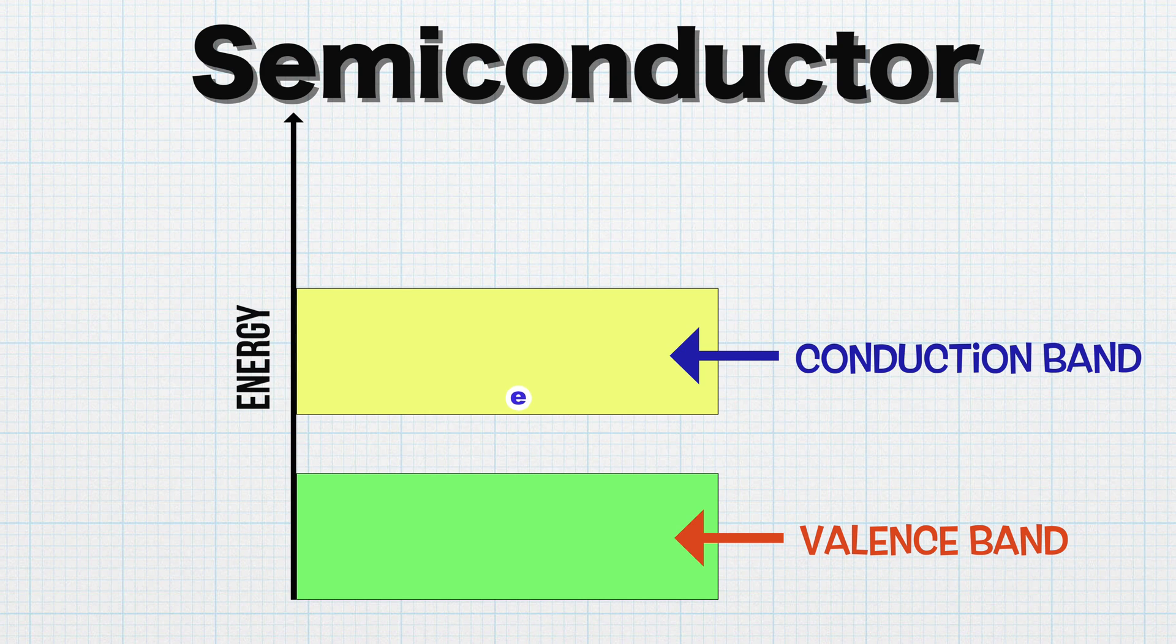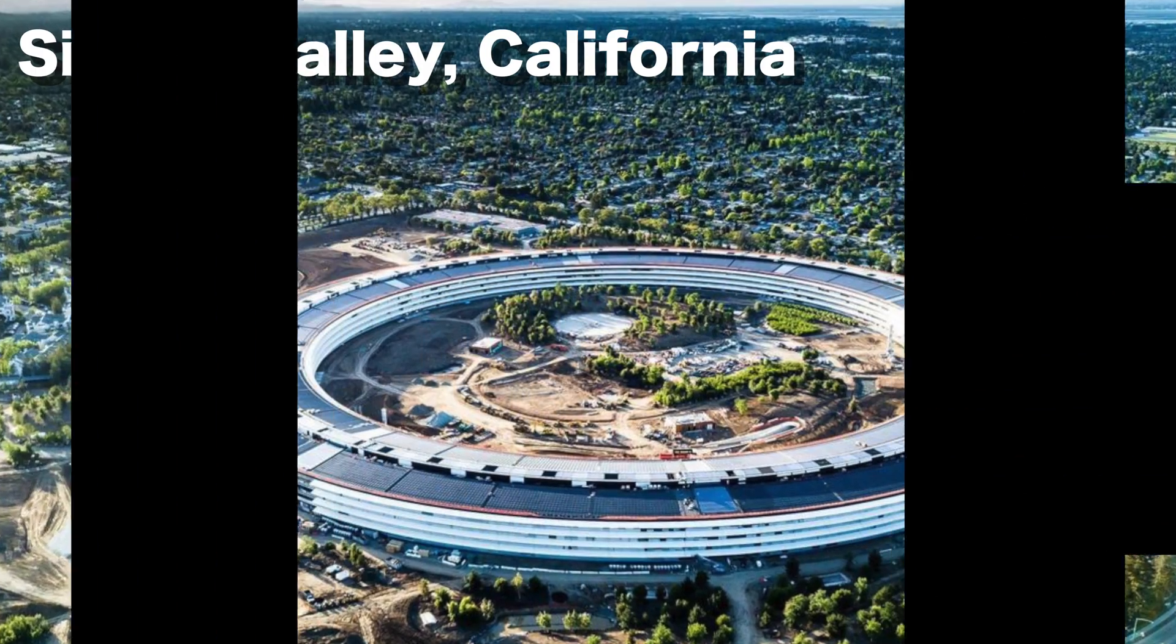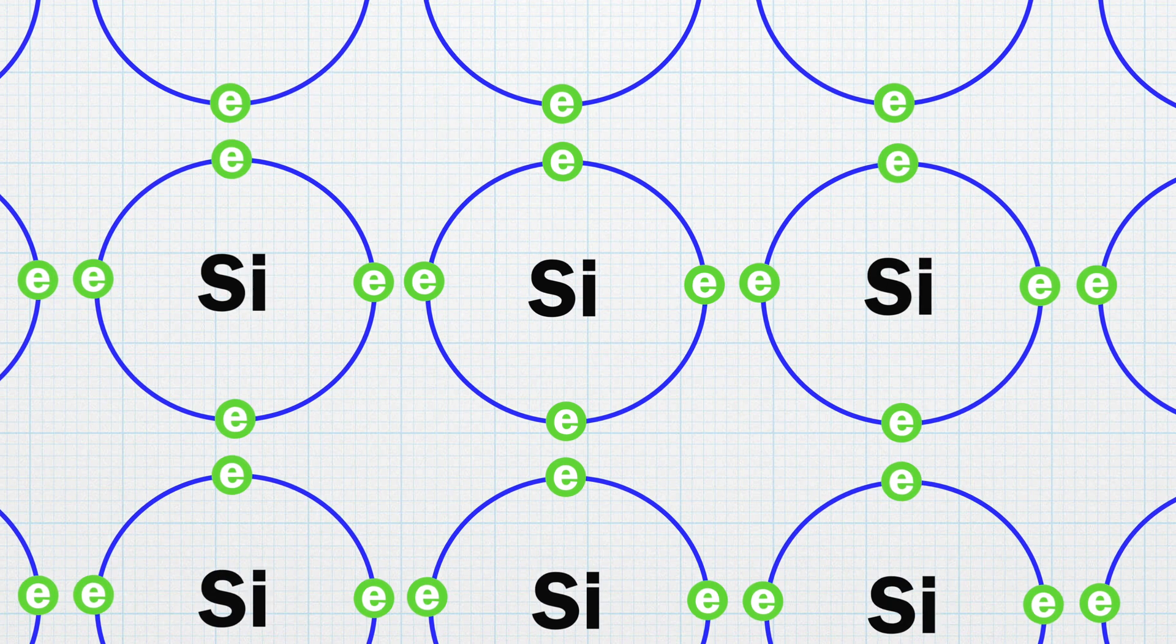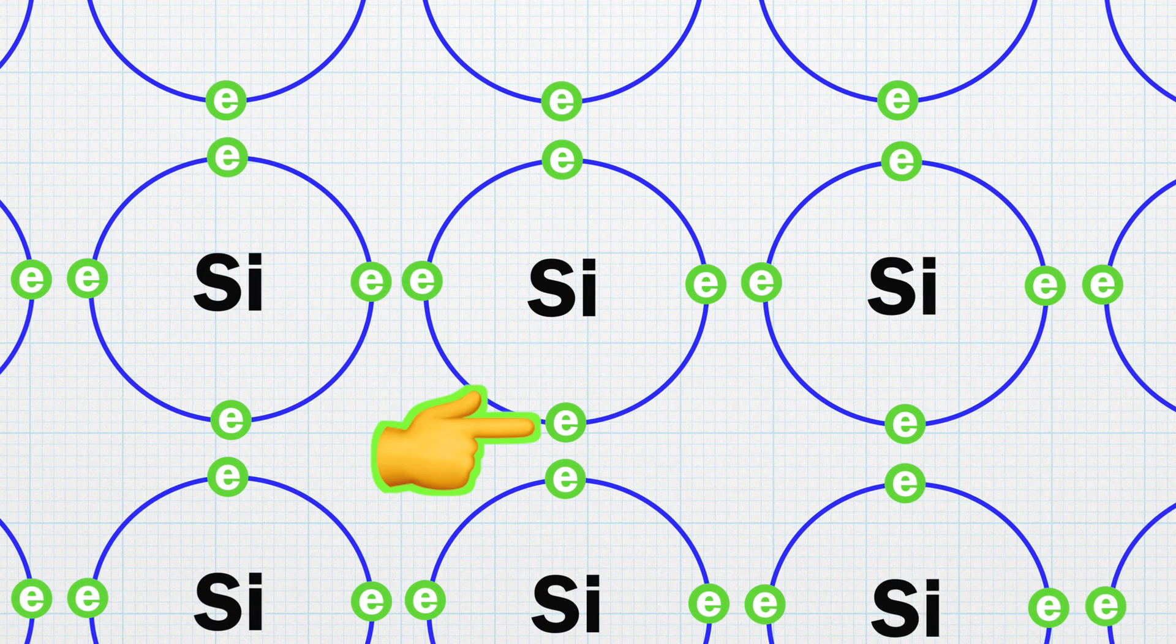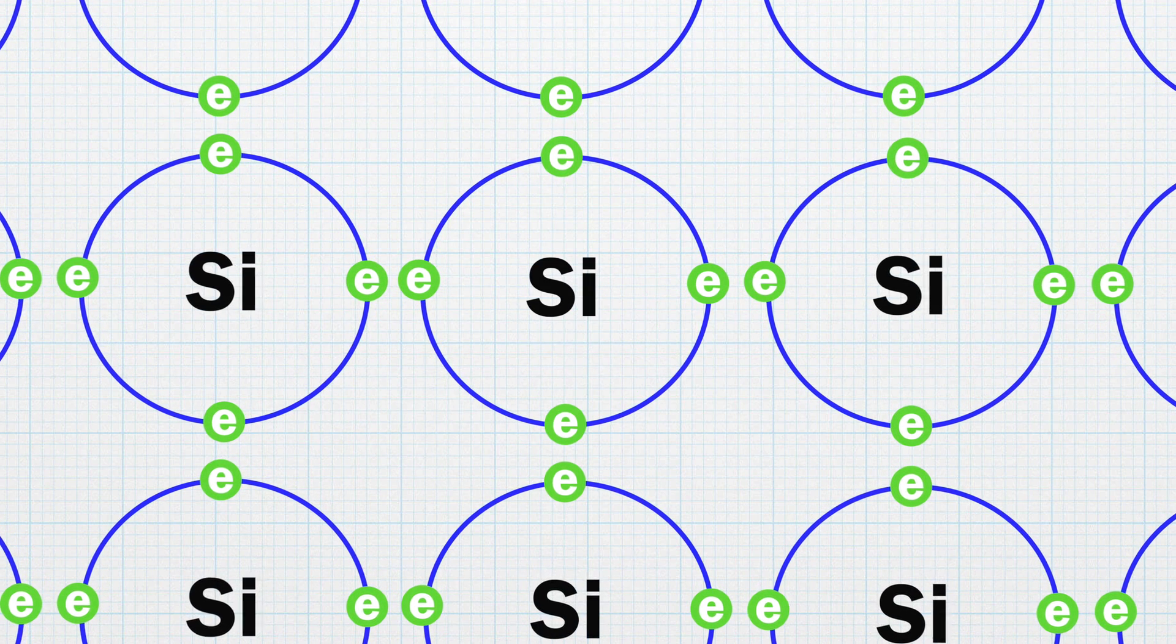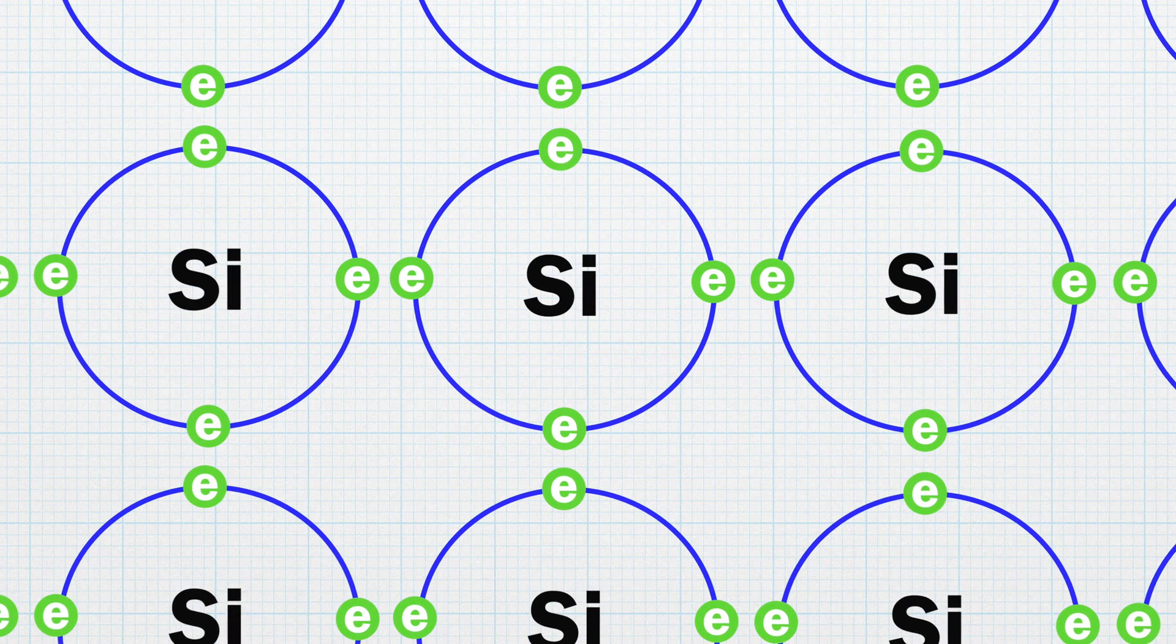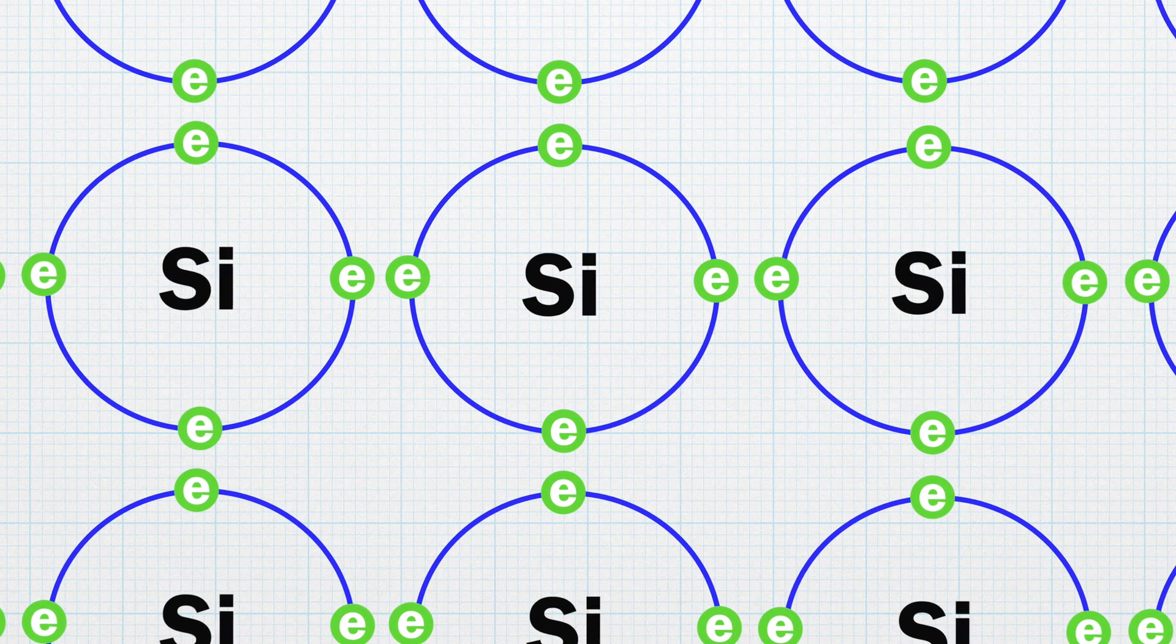The most widely used semiconductor material is silicon, hence the name Silicon Valley in California. Silicon atom has four valence electrons, so each silicon atom can bind to four other silicon atoms. This way, all of the valence electrons are used to make a bond with other silicon and they cannot move around. Now, this makes a pure silicon crystal an insulator rather than a conductor.